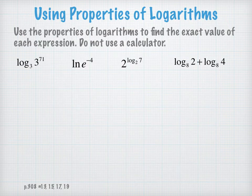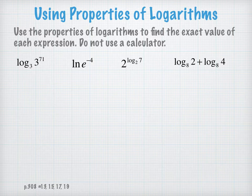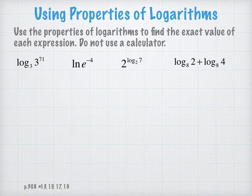We'll start with this slide. Use the properties of logarithms to find the exact value of each expression, and we're told to not use a calculator. So what we can do for this first example, log to the base 3 of 3 to the 71.